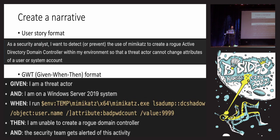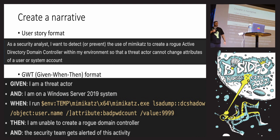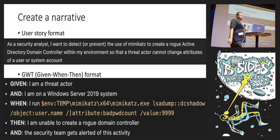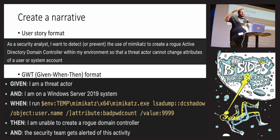Create that narrative — you can use the user story format, or I personally like the given-when-then format, which is pretty common for QA or software development and testing. It allows you to codify things if you want to later. For example: given I'm a threat actor on Windows Server, when I run this command borrowed from Atomic Red Team, then I'm able to create a rogue domain controller and the security team gets alerted. Or maybe you want it to prevent the attack. It gives you a way to logically separate things out and understand your requirements a bit further.